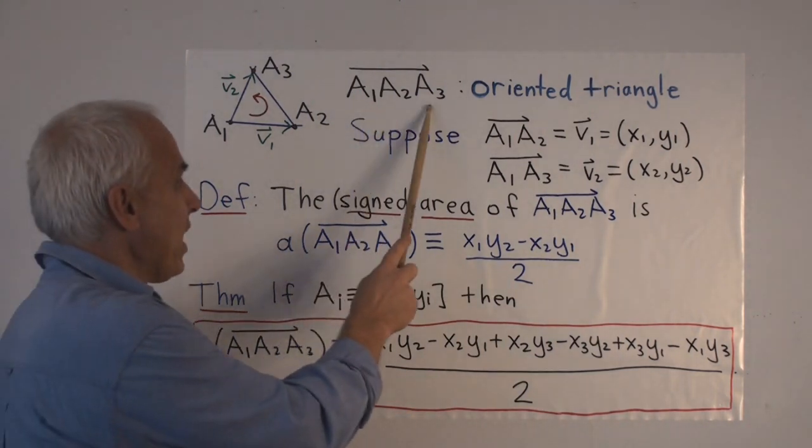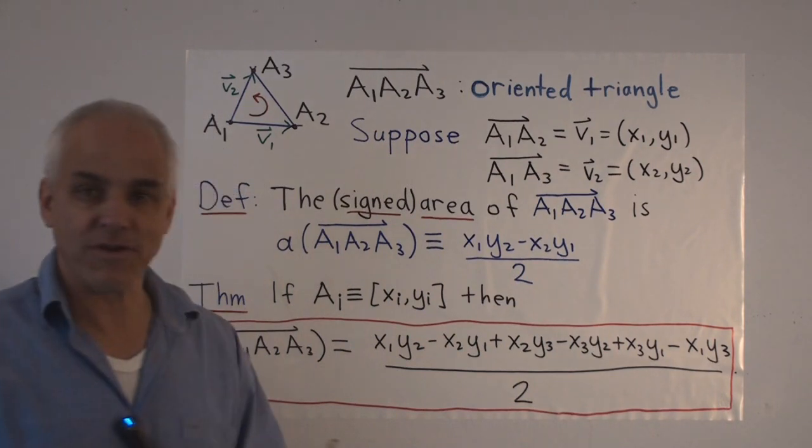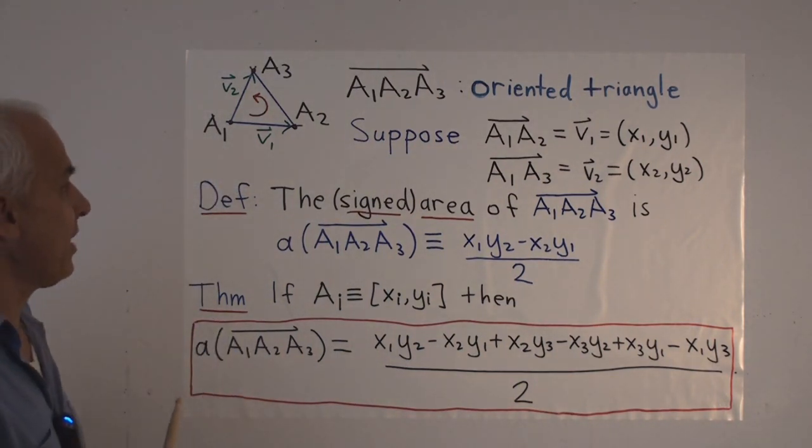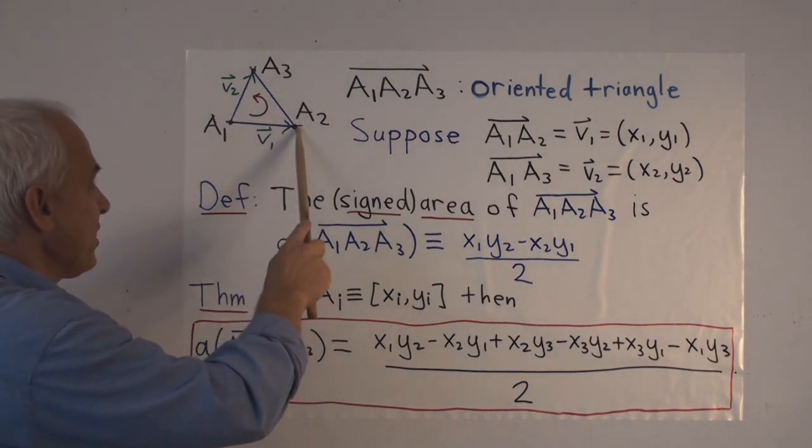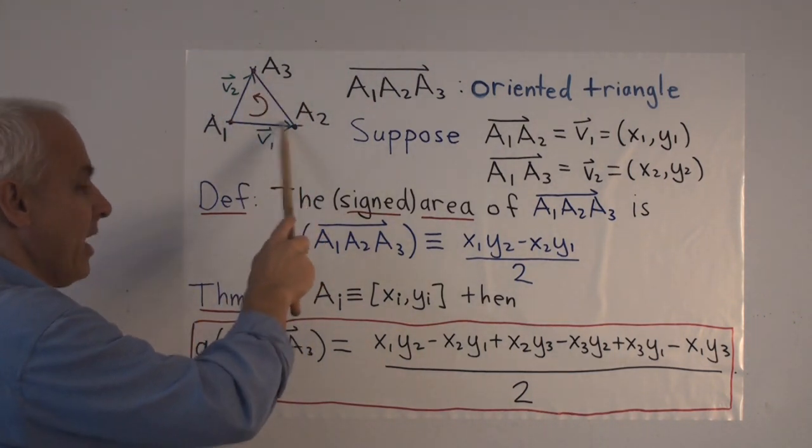So when we say A1, A2, A3, with a vector sign over it, we mean the triangle A1, A2, A3, together with the orientation going this way. A1 first, then A2, then A3, then A1, then A2, and so on.